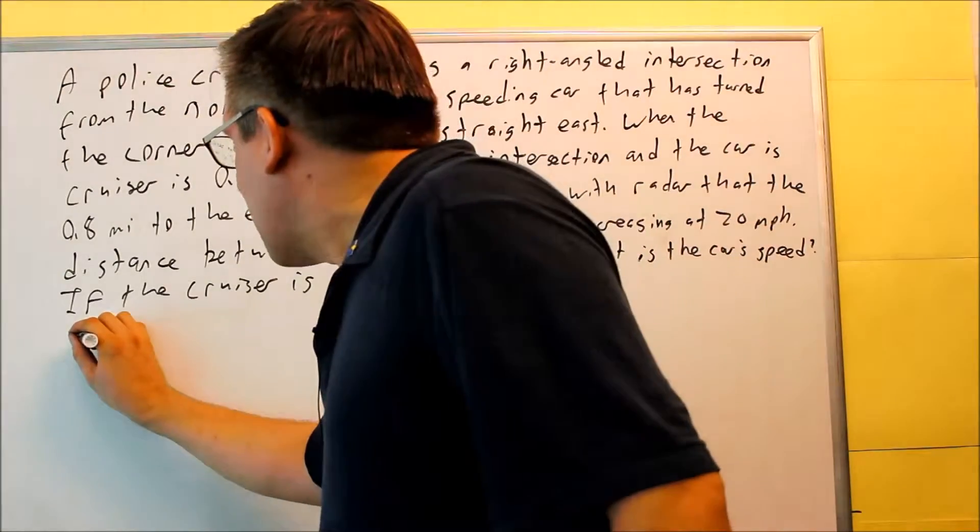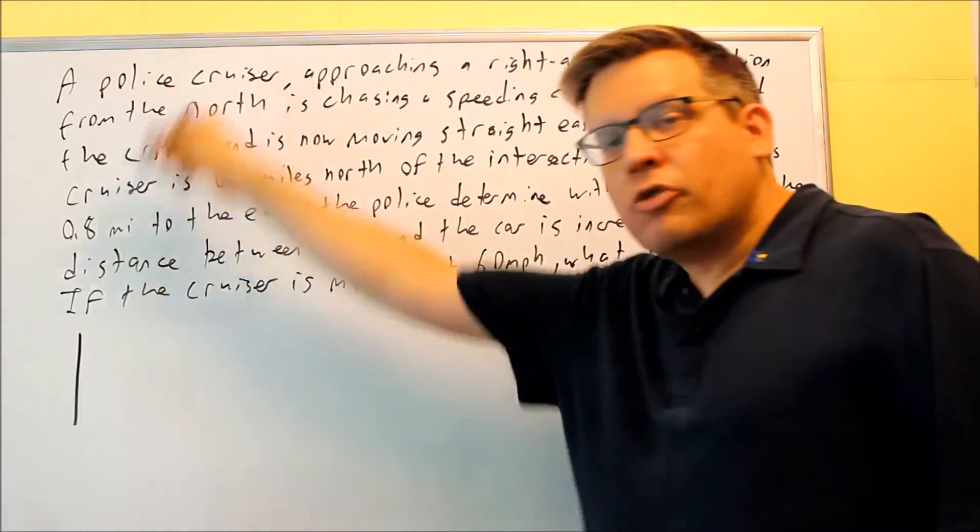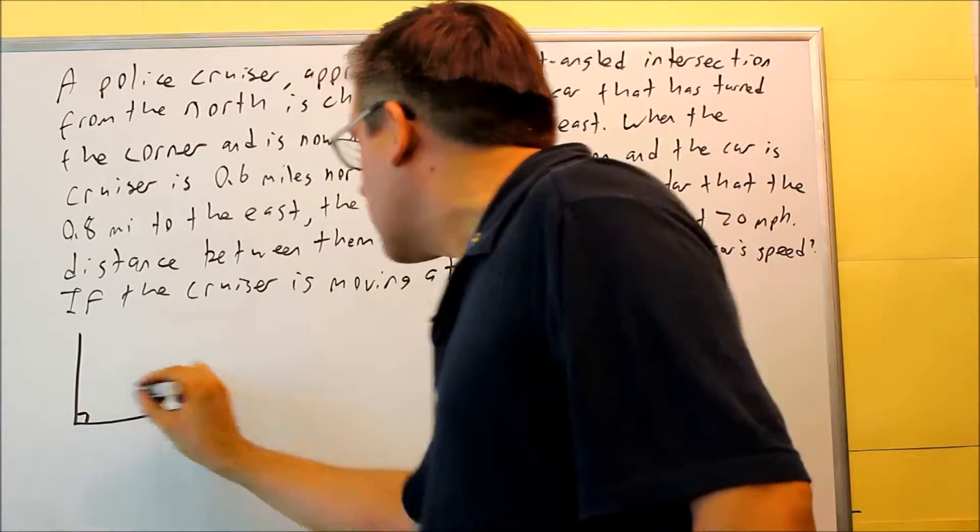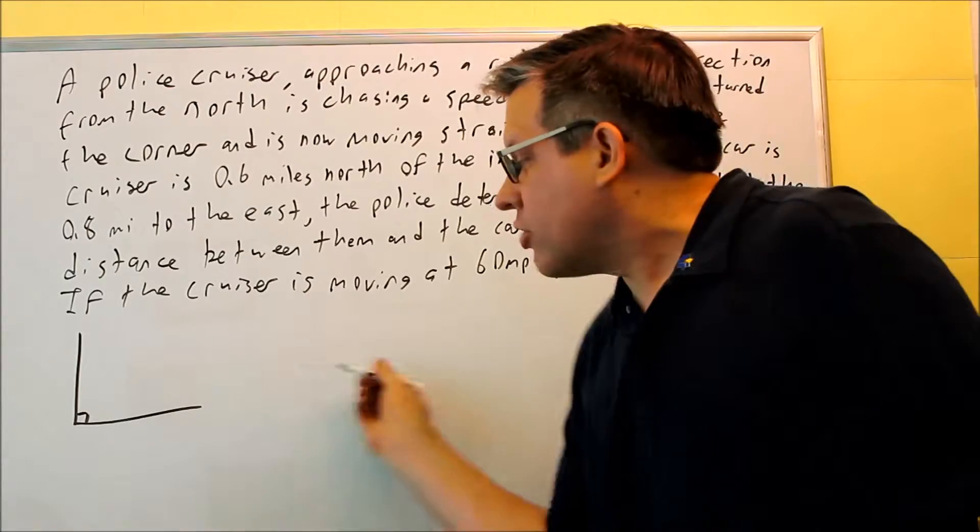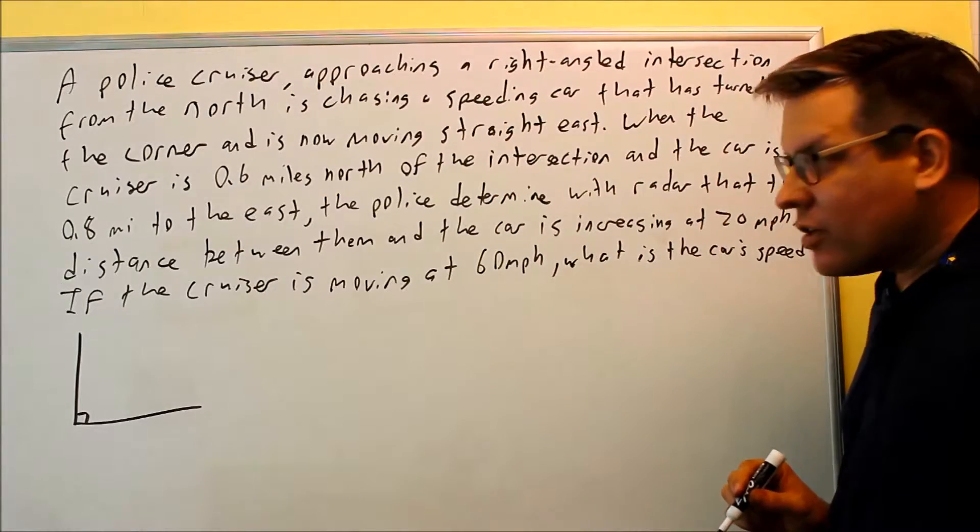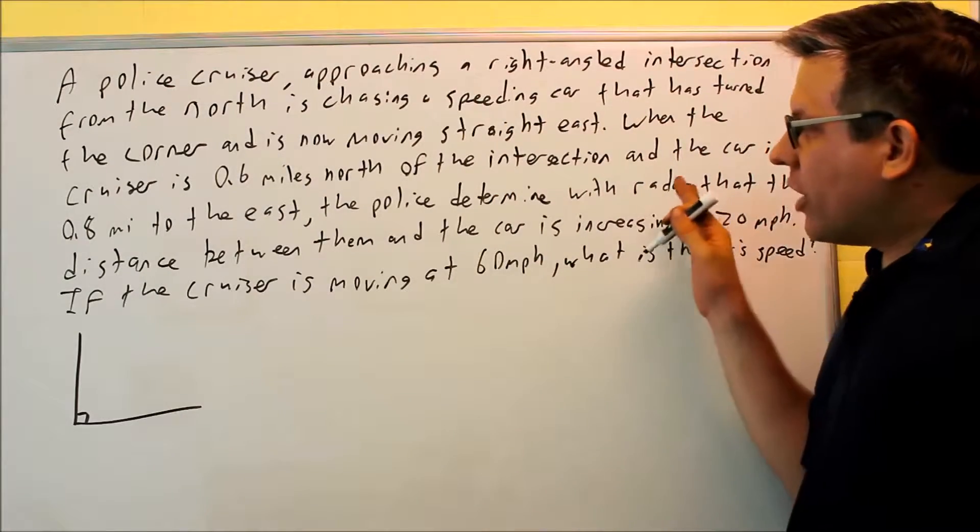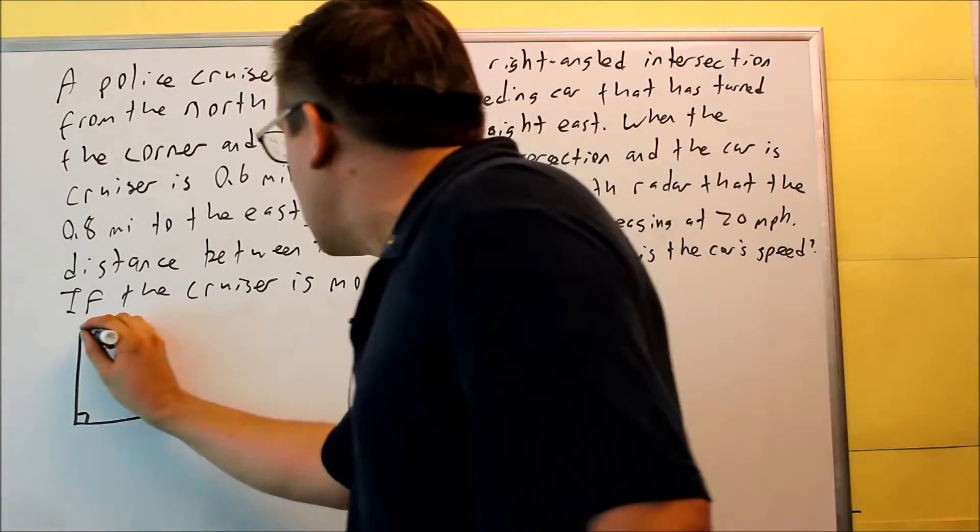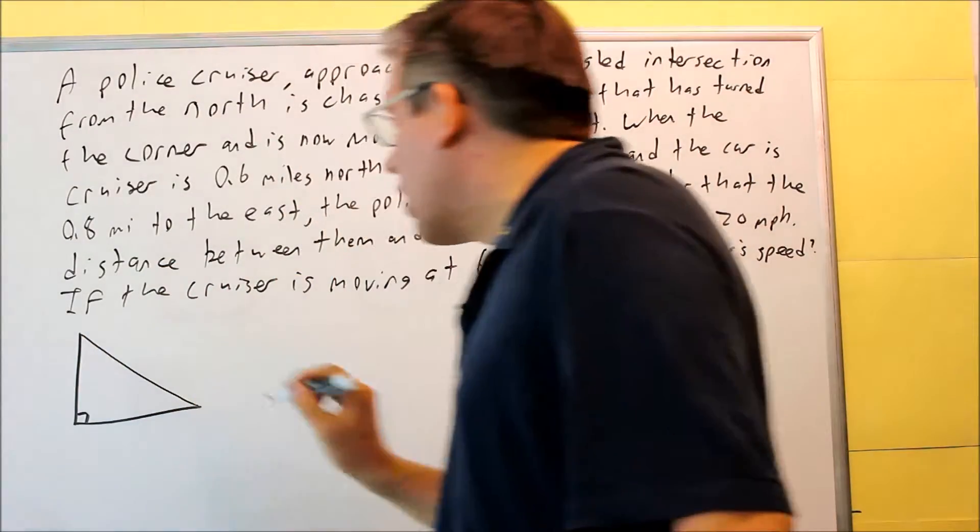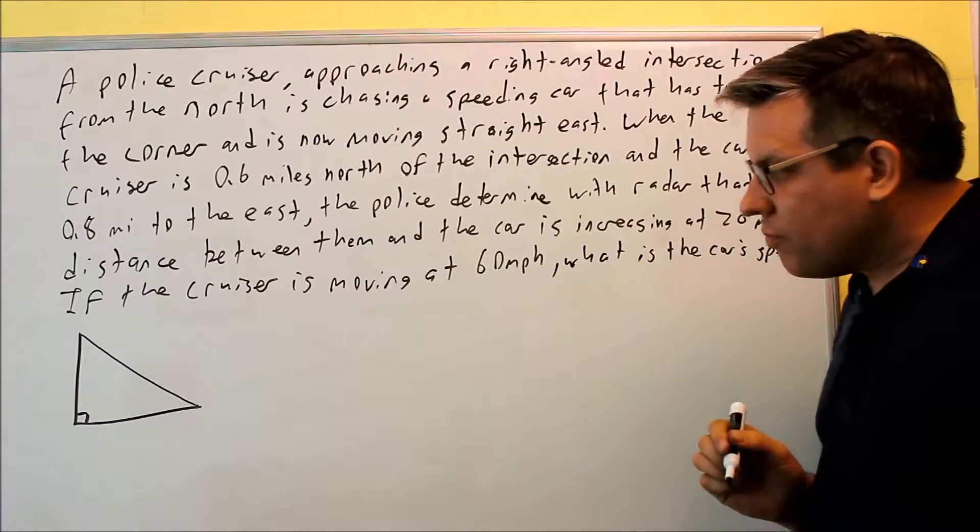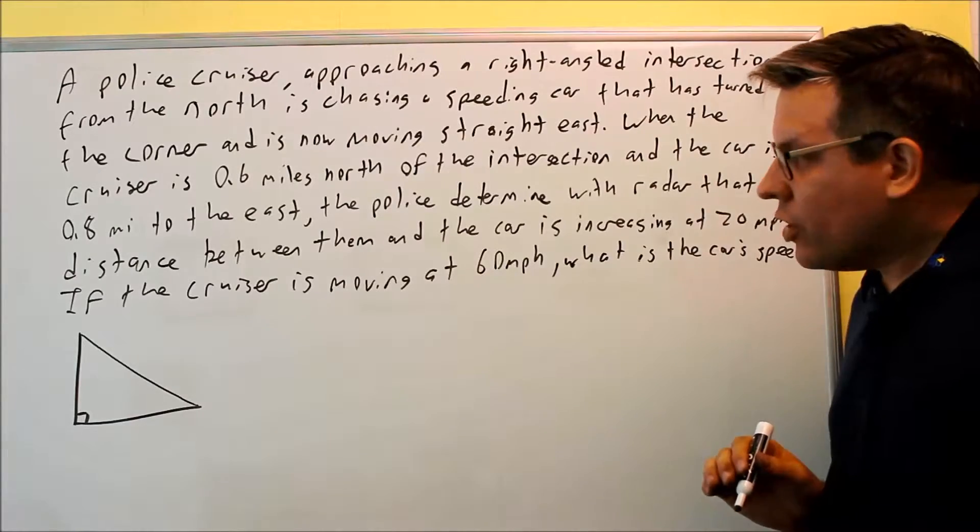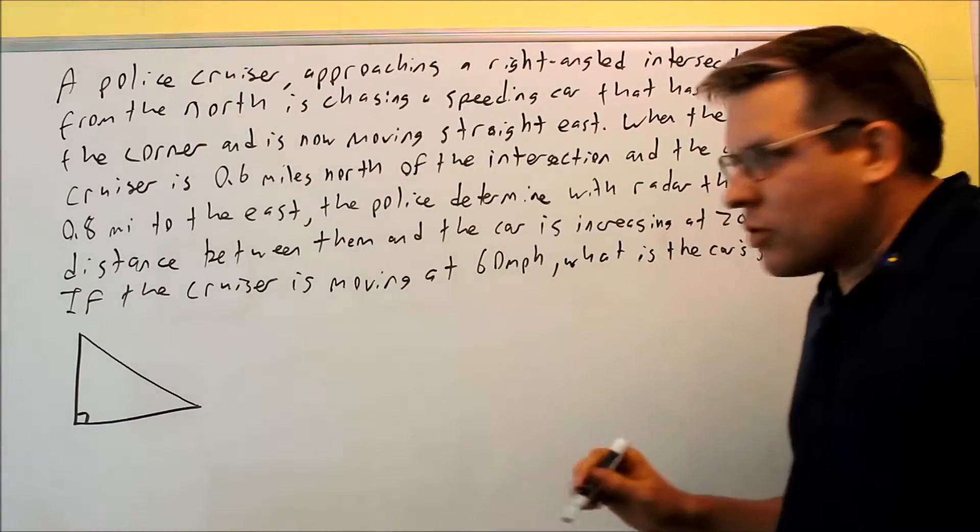Let's draw a picture that describes that. The cruiser is coming down from the north, so it's moving down. We hit the right-angled intersection and then the other car has already made that turn and it's gone to the right. Now later on in this problem, I notice it says distance between them, so I'm going to have to do something about this third side, so I'm actually going to form a triangle.